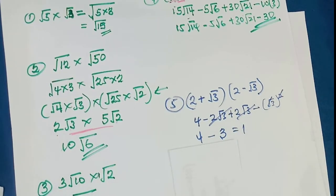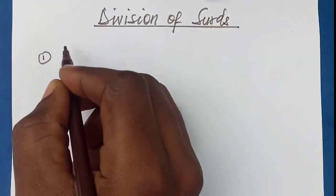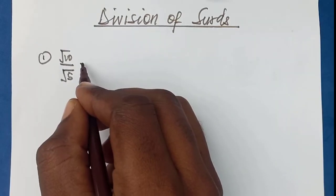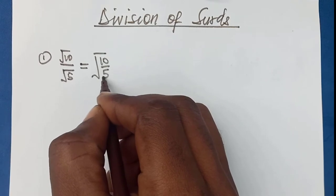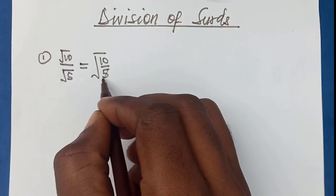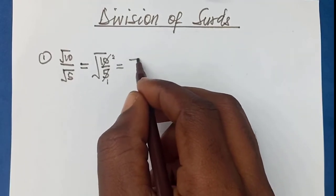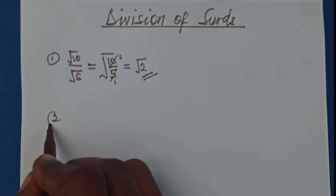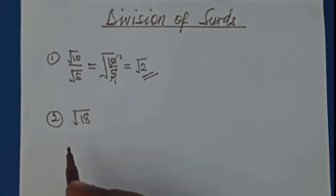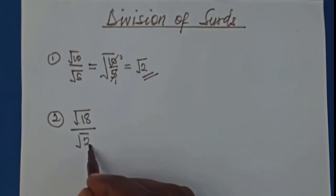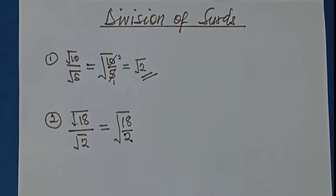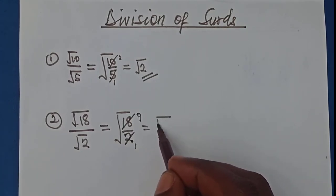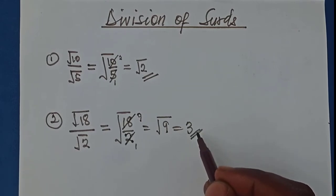Now let's talk about division of sets. If we have root 10 divided by root 5, this becomes the square root of 10 over 5. Simplifying 10 over 5 gives 2, so the answer is the square root of 2. For the second example, root 18 divided by root 2 becomes square root of 18 over 2, which simplifies to square root of 9, and the square root of 9 is 3.